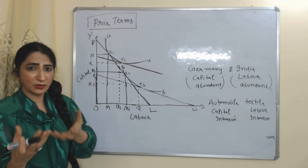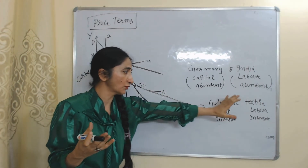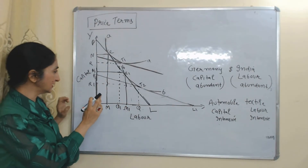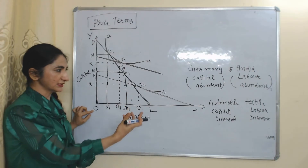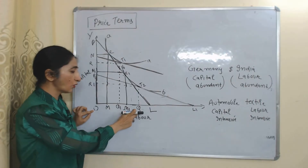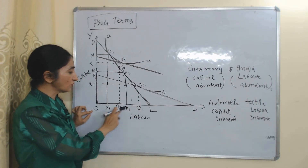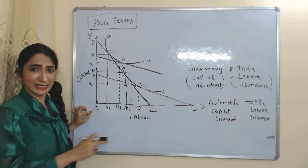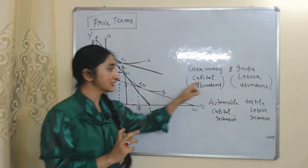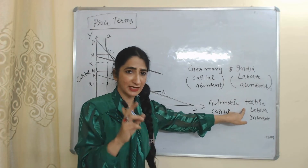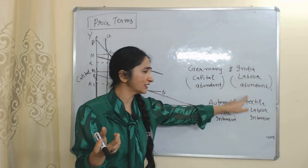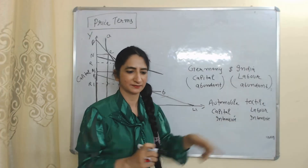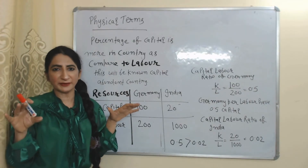Now we will see how much labor India requires. If India wants to produce one unit of automobile, it needs labor OQ1. If India wants to produce one unit of textile, it needs labor OQ. Since OQ is greater than OQ1, the requirement of labor is more in the production of textiles. Since India is a labor-abundant country and textile production requires more labor, India will go for the production of textiles and increase production and export of textiles. Now we will see this theory in physical terms.